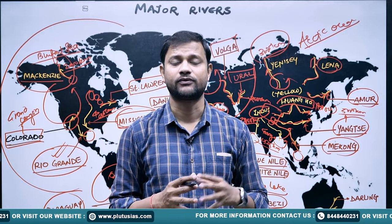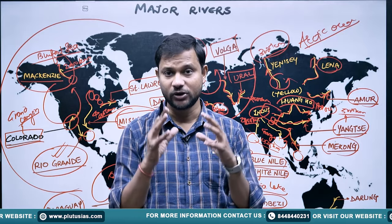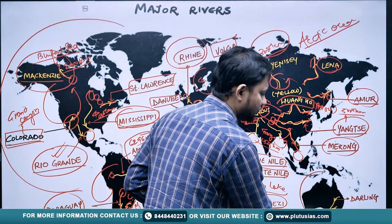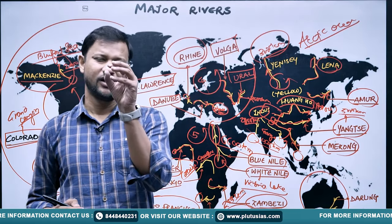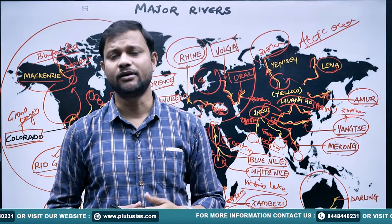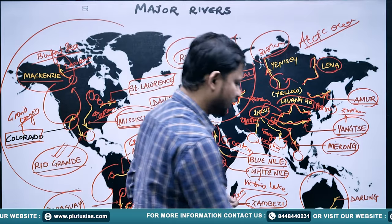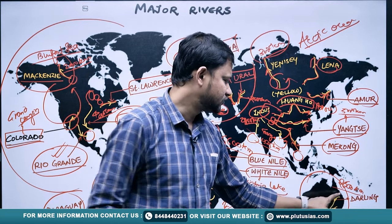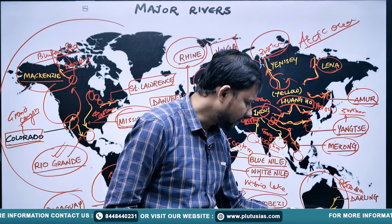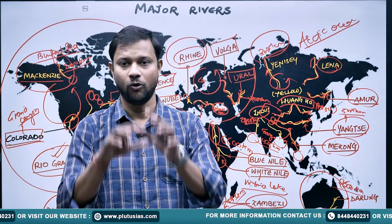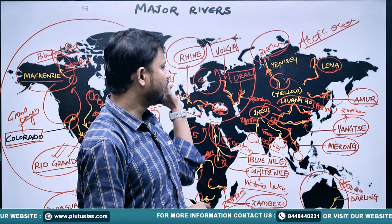The last and smallest continent is Australia. Here the major river basin is the Murray-Darling Basin. The Murray and Darling rivers together have a length of almost 2,600 kilometers and finally drain into the southern oceanic part.